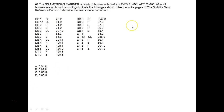In this problem we are given the following information. This is the SS American Mariner. She's ready to bunker with the following drafts. After all bunkers are aboard, soundings indicate the tonnage shown. We need to use the white page stability data reference book to determine the free surface correction.